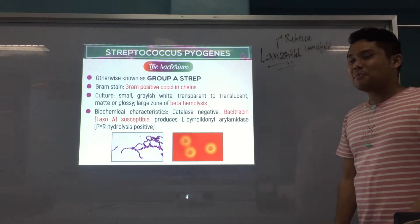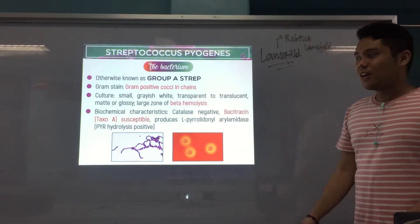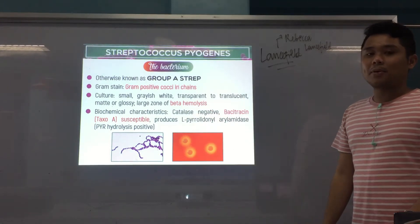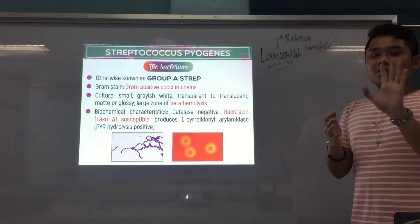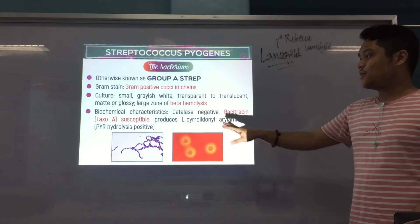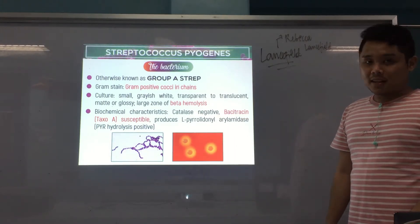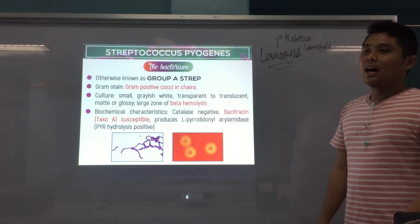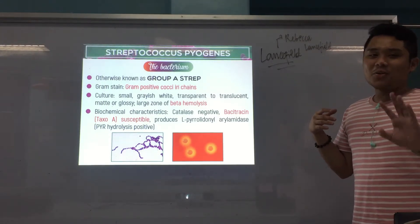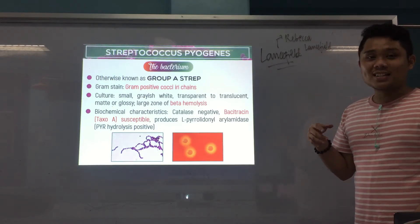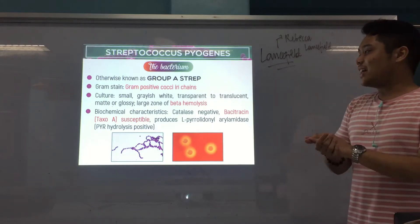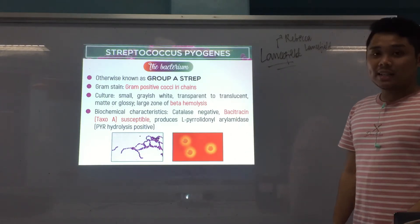Some of its biochemical characteristics: it is bacitracin susceptible (taxo A), catalase negative — catalase is the test that separates Staph from Strep among cocci, since Staph is catalase positive and Strep is catalase negative — and PYR positive. These are key biochemical identifiers of Streptococcus pyogenes.